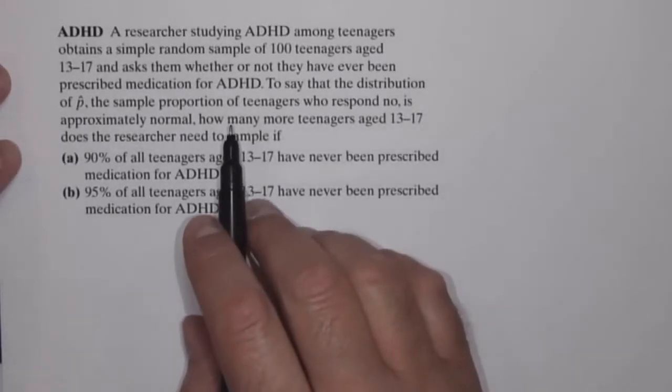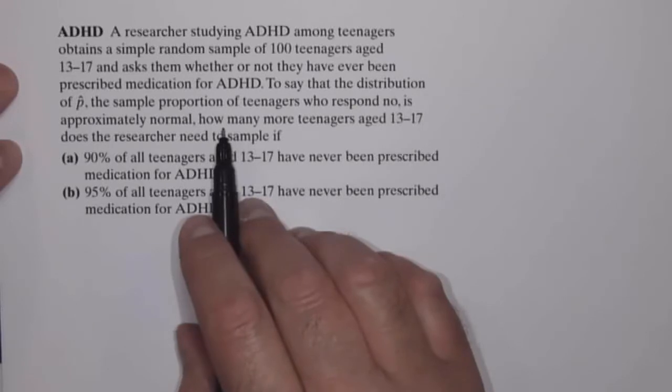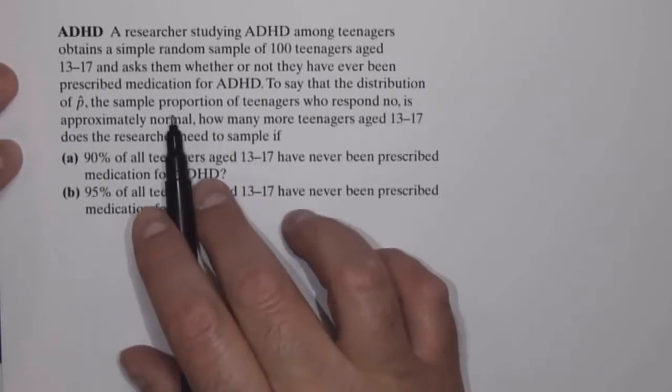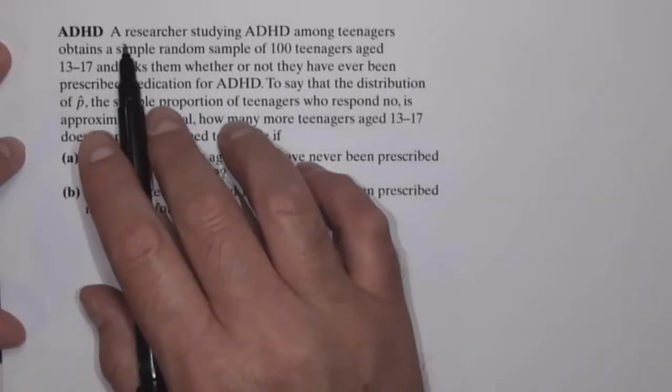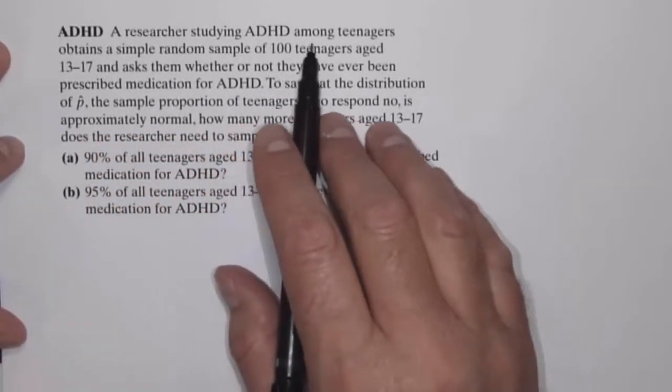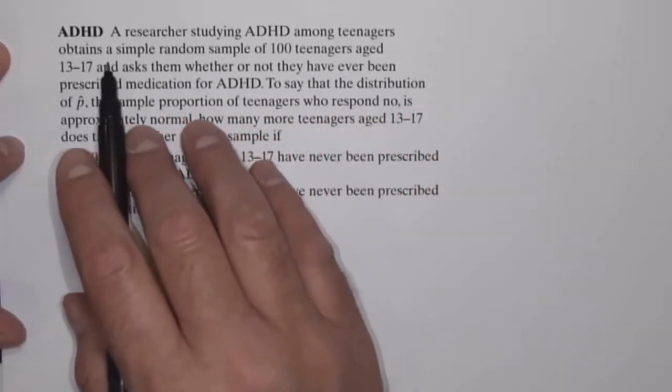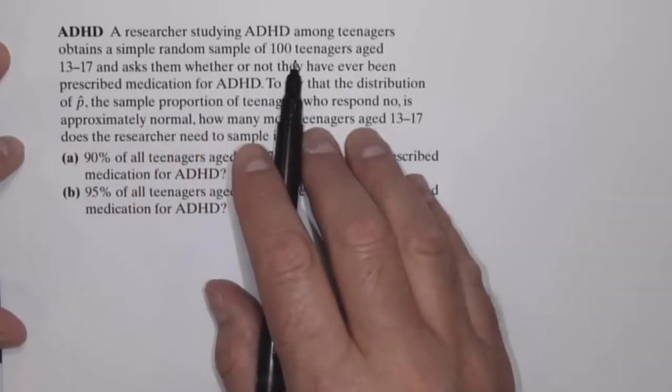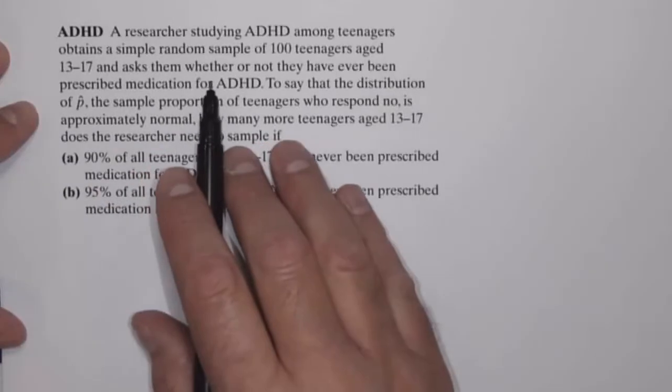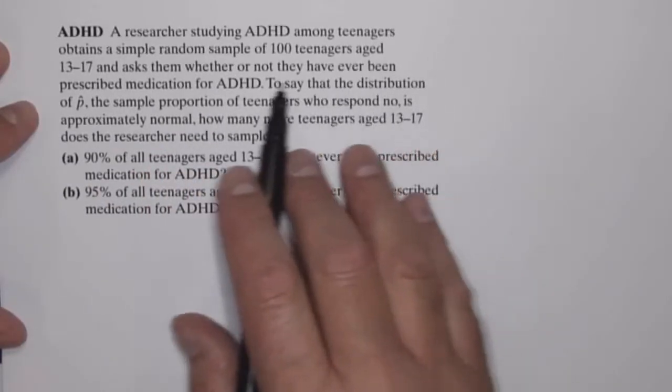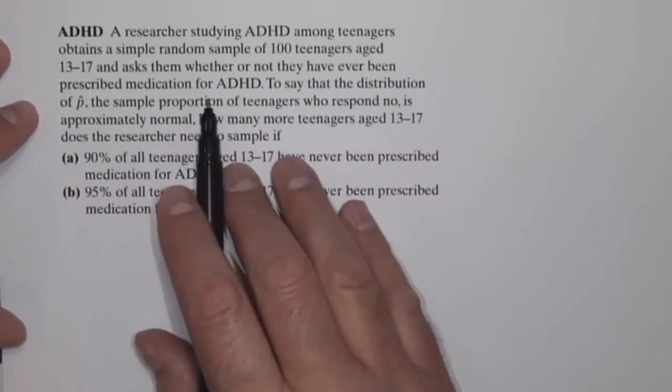In this video, we're going to look at another example involving a sampling distribution of the sample proportion p-hat. A researcher studying ADHD among teenagers obtains a simple random sample of 100 teenagers aged 13 through 17 and asks them whether or not they have ever been prescribed medication for ADHD.